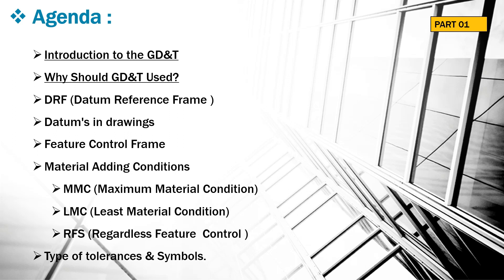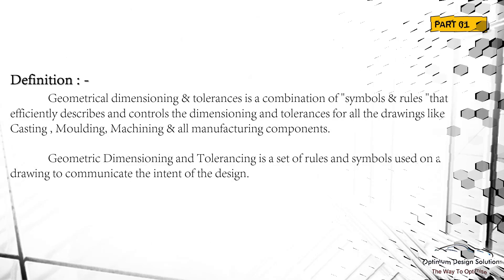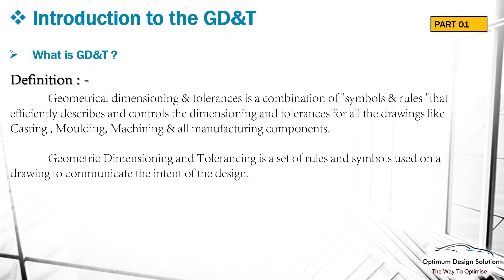Why should GD&T be used? Then datum reference frame, that is the DRF, then datums in the drawing, feature control frame, and material condition. In this we are going to see maximum material condition, least material condition, and regardless feature control. Then different tolerances and their symbols, and how we are applying GD&T in the drawing. Without wasting time, we'll start with the introduction.